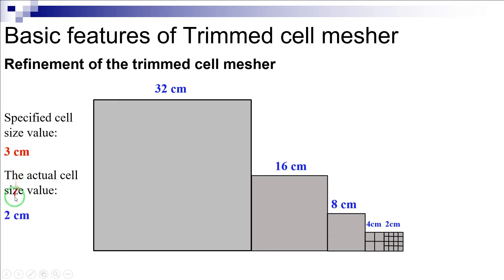Therefore, if a particular absolute value for the cell size is required in a certain region, the base size of the mesh must be a power of 2 of this required cell size in order to actually realize the exact desired value. Otherwise, the cell size within the region where the mesh refinement is applied will snap to the factor of 2 of the base size nearest to the input value.